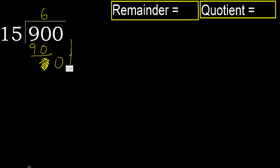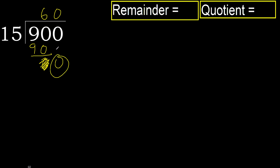Therefore next — there is no number, therefore finish. Complete with 0, always complete with 0. Because here we finish with this number.